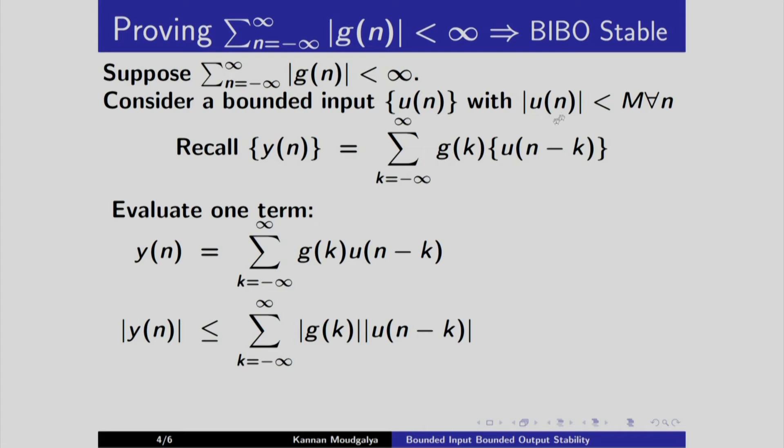And remember that u is bounded for all n. So, if I replace this by a larger value, its bound, this is going to be smaller than that. So, I get this less than or equal to M into this. But we know that this is bounded. So, as a result, we find that y is also bounded. M is bounded. This absolute sum is bounded. So, this y is bounded. So, we have shown for all bounded inputs, the output is bounded. So, we have shown the statement in this direction.